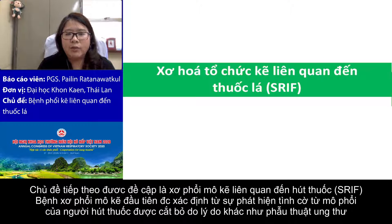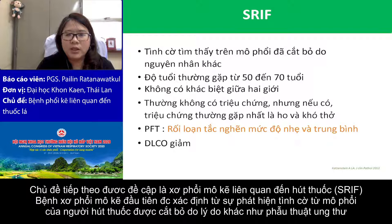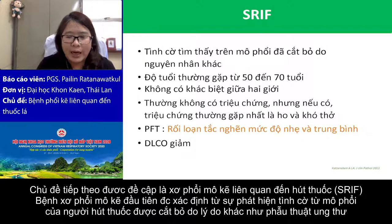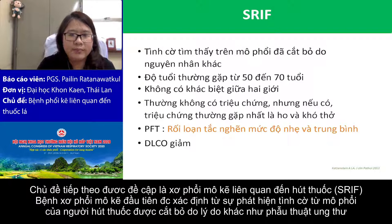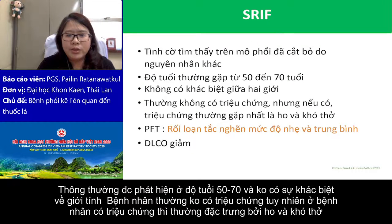The next topic: I will talk about smoking-related interstitial fibrosis or SRIF. SRIF is firstly defined from incidental findings in smoker lung tissue that was cut or removed for other reasons like cancer surgery. It is usually found in the 5th to 7th decade of life. There is no gender difference. Patients are usually asymptomatic.